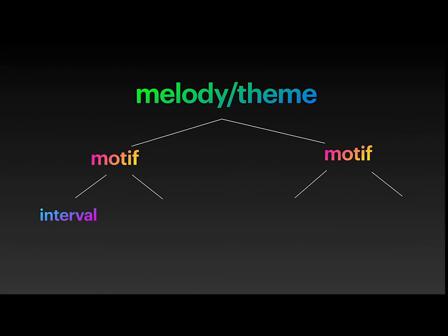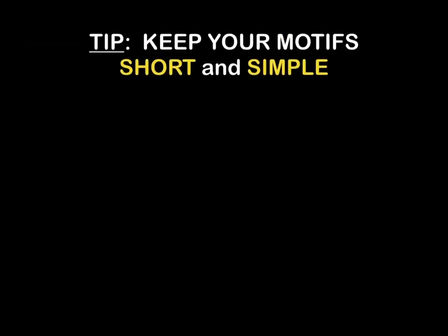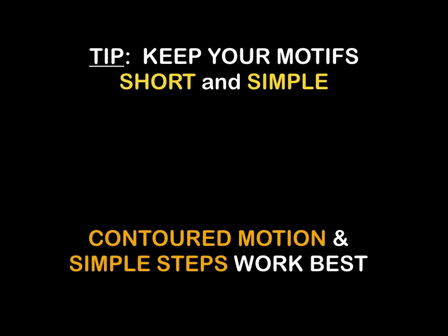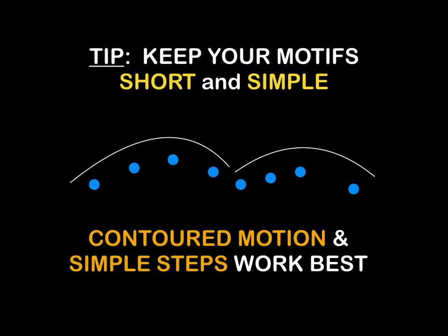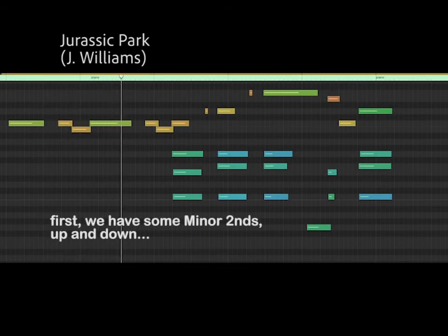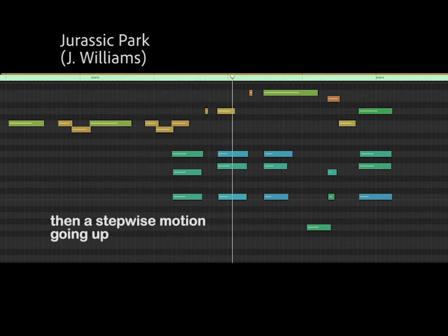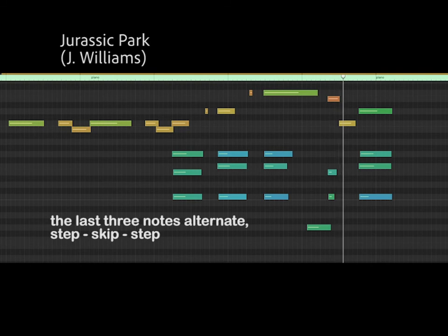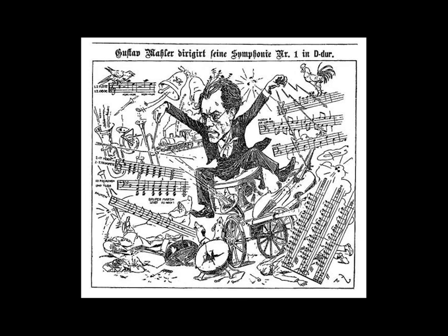Motifs, which are the building blocks to themes and melodies, are comprised of a series of intervals, and you want to try to mix them up a bit. Good motifs tend not to be comprised of just scales or all steps that are the same size. In movie writing, they tend not to be very long — four to seven notes. My favorite melodies tend to feature a variety of adjacent steps, utilizing upward and downward motion.